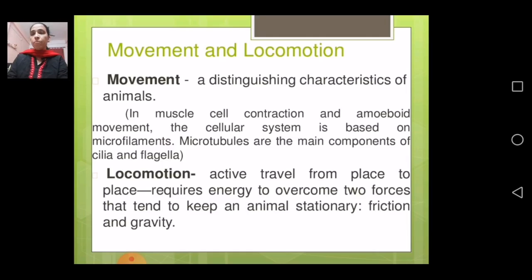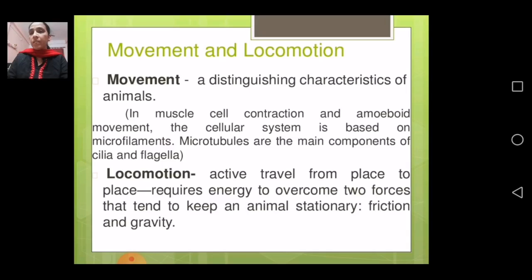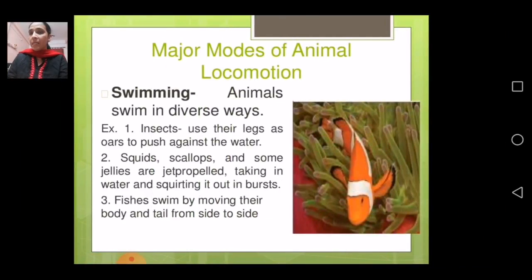Locomotion requires energy to overcome two forces that tend to keep an animal stationary: friction and gravity. These two forces must be overcome to allow movement. The earthworm is a good example of locomotion — we have seen how earthworms walk, and that is again an example of locomotion.